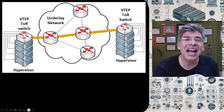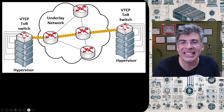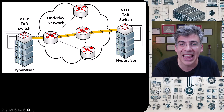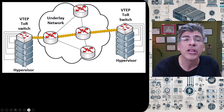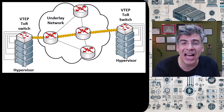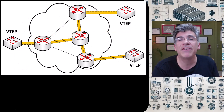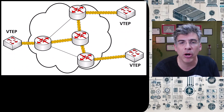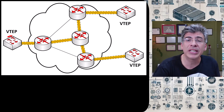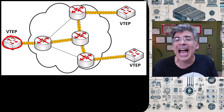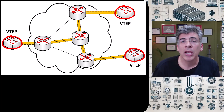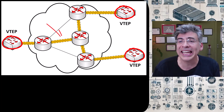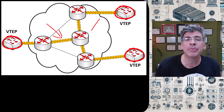So how are VNIs and VTEPs used in a VXLAN topology to create VXLAN tunnels across the underlay network? Let's take a look at this VXLAN topology. Here we have three switches acting as VTEPs for VXLAN, and we can see that layer 2 tunneling has been established between them.